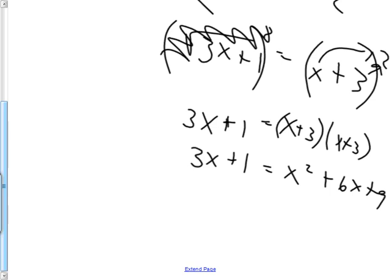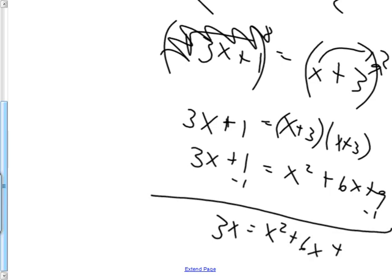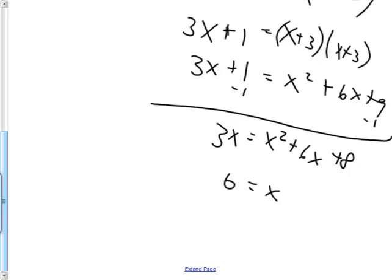So you can factor it. And if you can factor it, the quadratic works out really nice. Unfortunately, I don't think this one factored. So subtracting 1 from both sides, I have 3x equals x squared plus 6x plus 8. And then I subtract 3x from both sides. Final answer, 0 equals x squared plus 3x plus 8. Do you agree? Did I do that right? Okay, good. All right, now what?